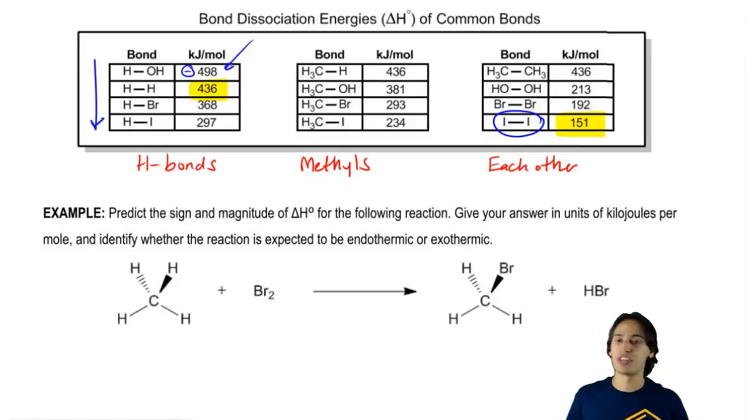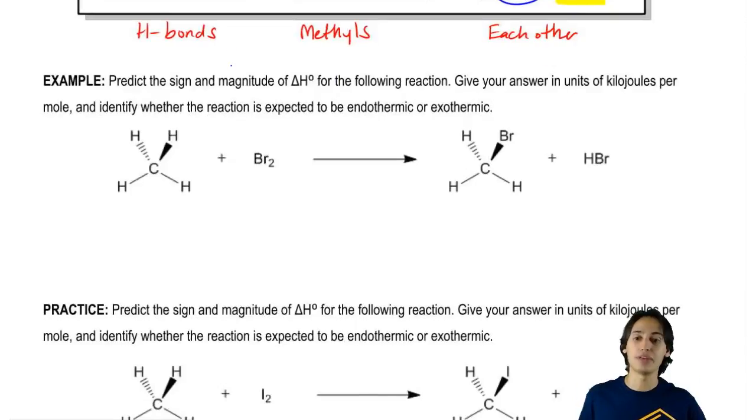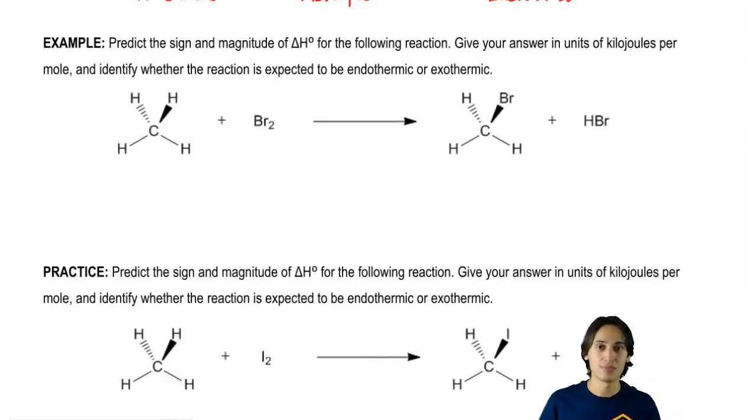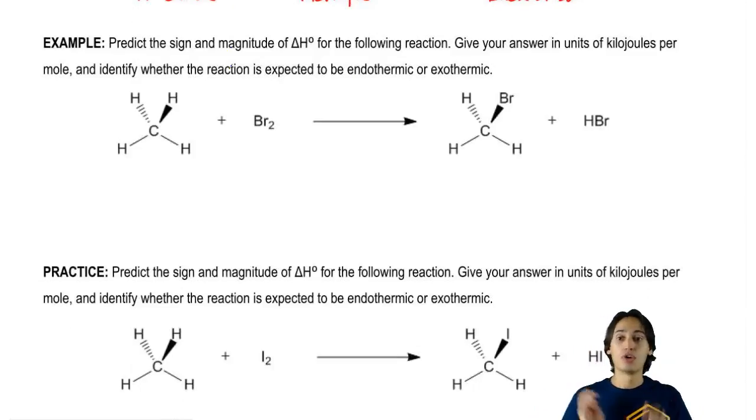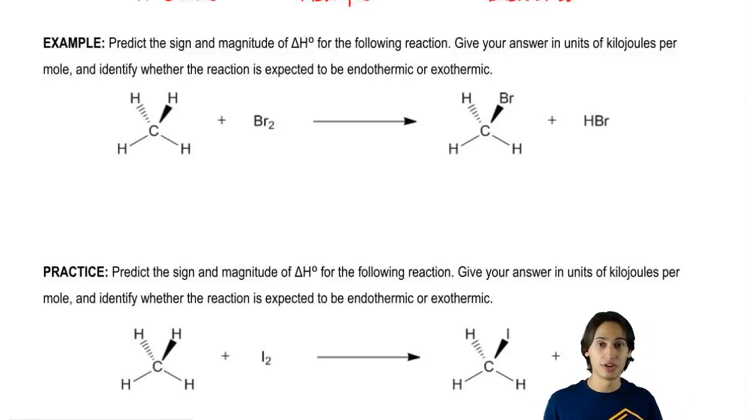So what I want you guys to do for the next two problems is I want you guys to analyze the reaction that's taking place. You don't need to know the mechanism. You don't need to know exactly what's going on. But what you do need to know is which bonds are being broken, which bonds are being made. And then assign values to those using the chart that I gave you above. At the end, after you sum all of that together, you're going to know the enthalpy of the reaction and you're going to be able to tell me, is this exothermic or endothermic? So go ahead and try it for yourself.